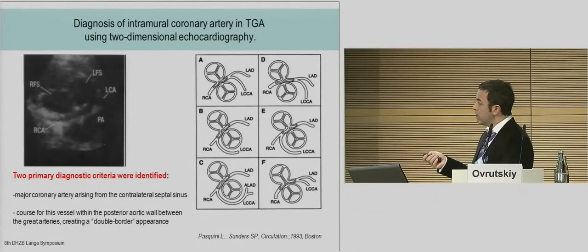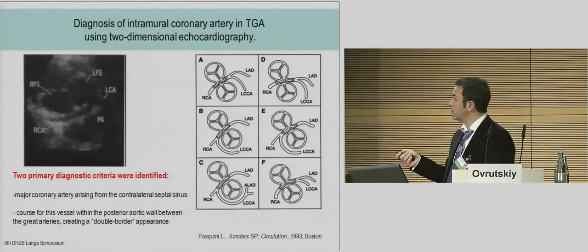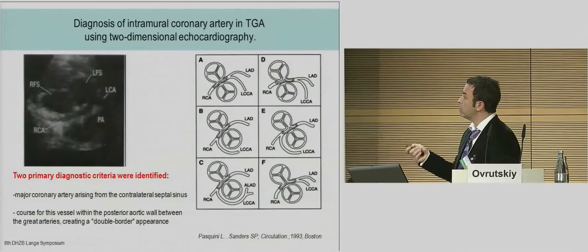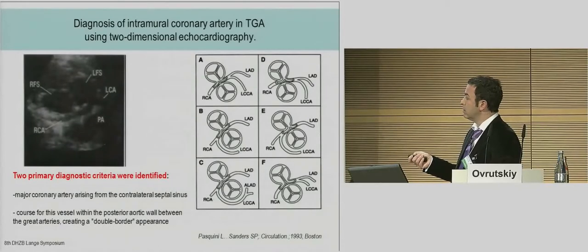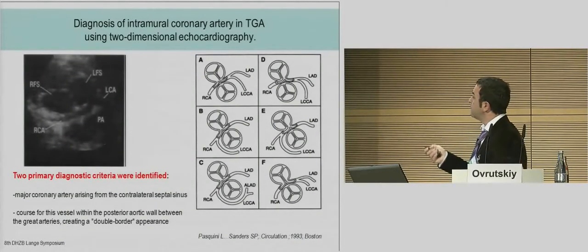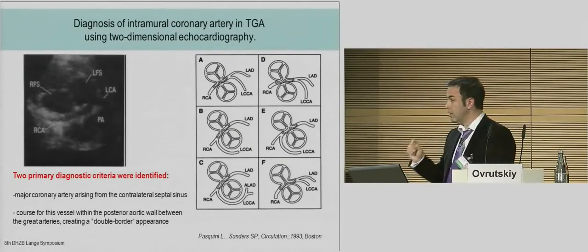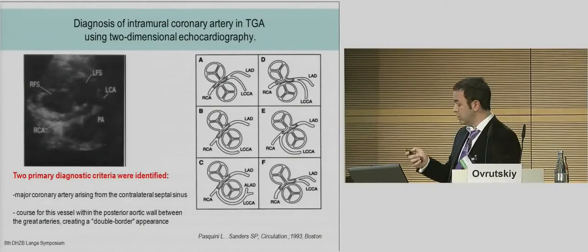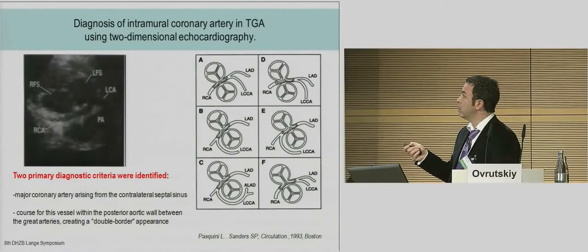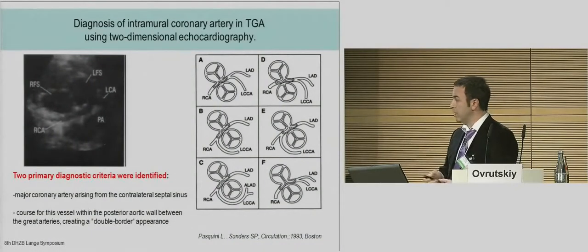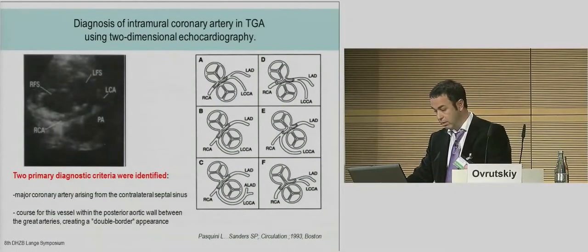Two primary diagnostic criteria were defined: a major coronary artery arising from the contralateral septal sinus, and the course of this vessel within the posterior aortic wall between the great arteries creating a double border appearance. We should always look for any such contour between the main arteries during the diagnostic workup.